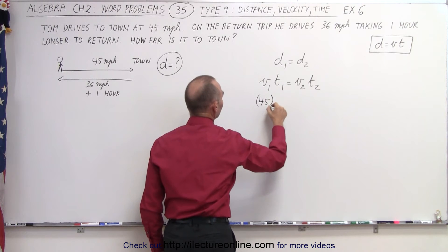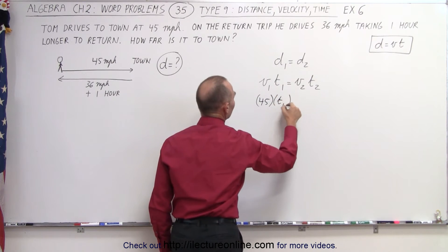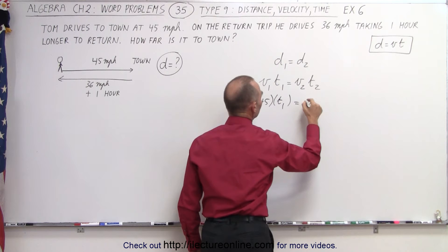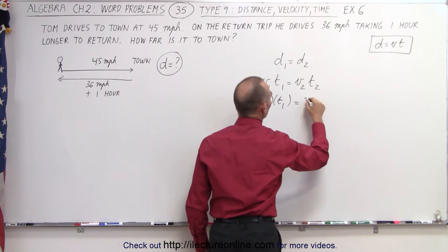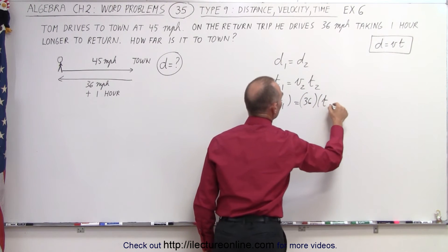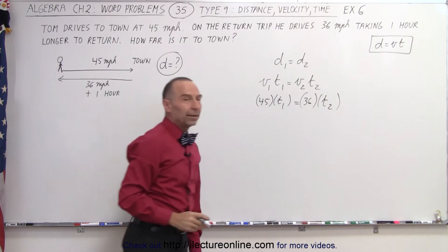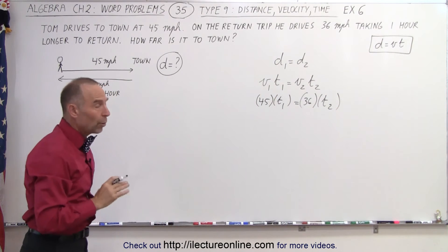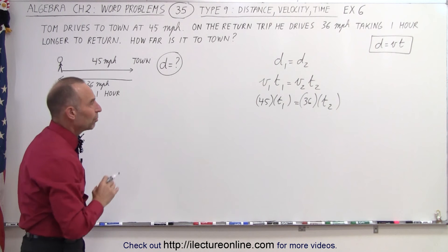So 45 times t₁, the time it takes to town, is equal to v₂, which is 36 times t₂. Now we don't know what t₁ and t₂ are, but we do know the relationship between the two.